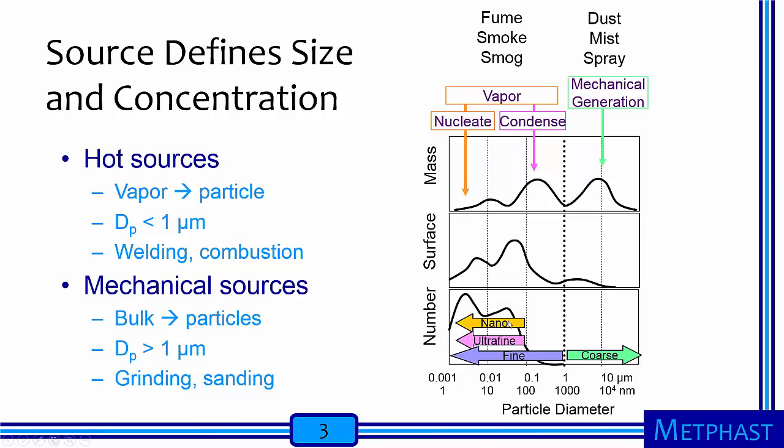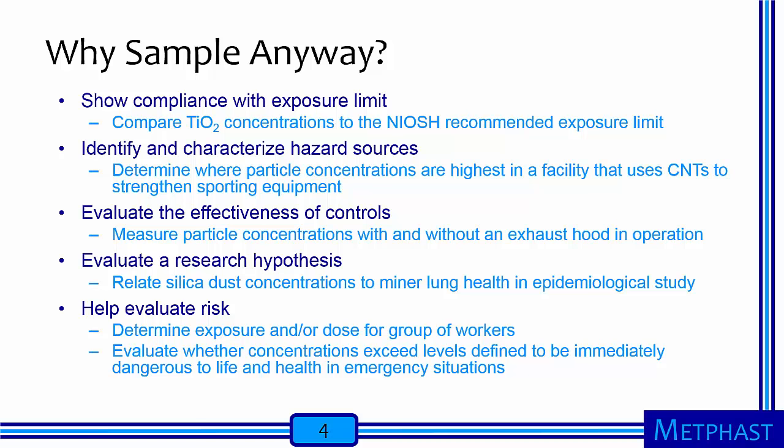As we have seen in a previous module, the source of an aerosol defines its size and concentration. We've expressed an aerosol by different metrics — number, surface area, or mass concentration on the y-axis, by particle size on the x-axis. Hot processes create vapors that nucleate or condense to form particles typically smaller than one micrometer in diameter, known as nano, ultrafine, and fine particles. Welding and combustion engines produce these kinds of particles — aerosols we know as fume, smoke, and smog. They dominate particle number concentration and can be an important component of mass distributions. In contrast, mechanical sources break a bulk material into coarse particles primarily larger than one micrometer, such as in grinding or sanding. These aerosols we know as dust, mist, and spray. They often dominate particle mass distributions but contribute little to particle number concentration.